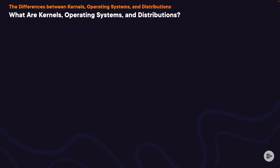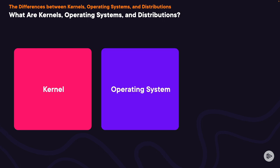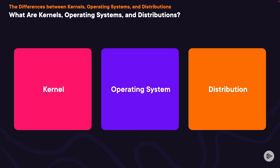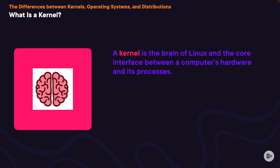A Linux system begins with a kernel. It can then have more features added to become an operating system. And then if you want specific applications or features added, it becomes a specific Linux distribution. The kernel is the central piece of code for Linux — you can't have Linux without a kernel. The kernel is the brain of Linux and the core interface between the computer's hardware and its processes. It's the core of the operating system, and it has four jobs.